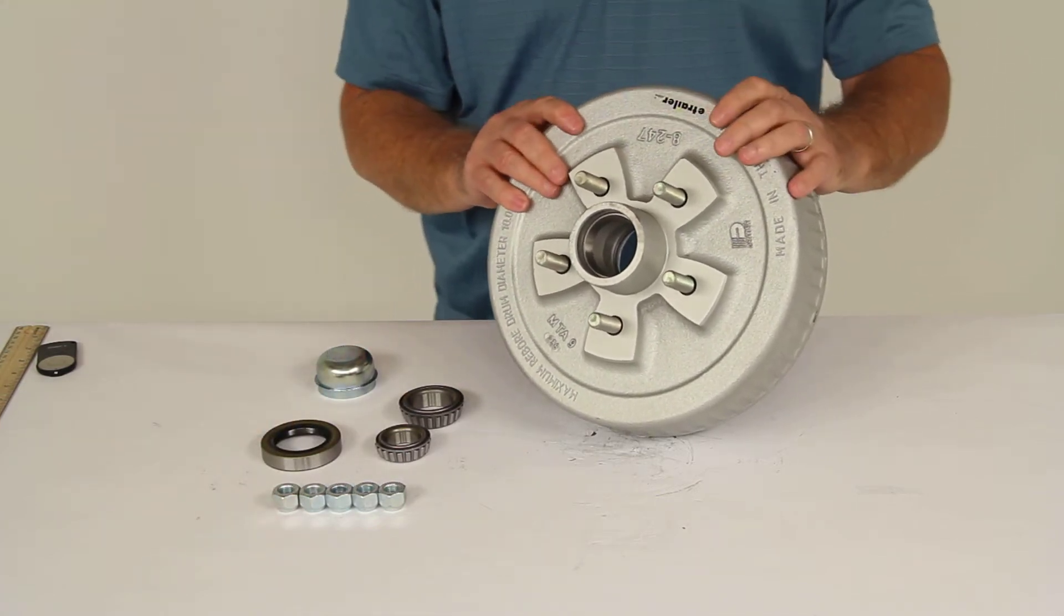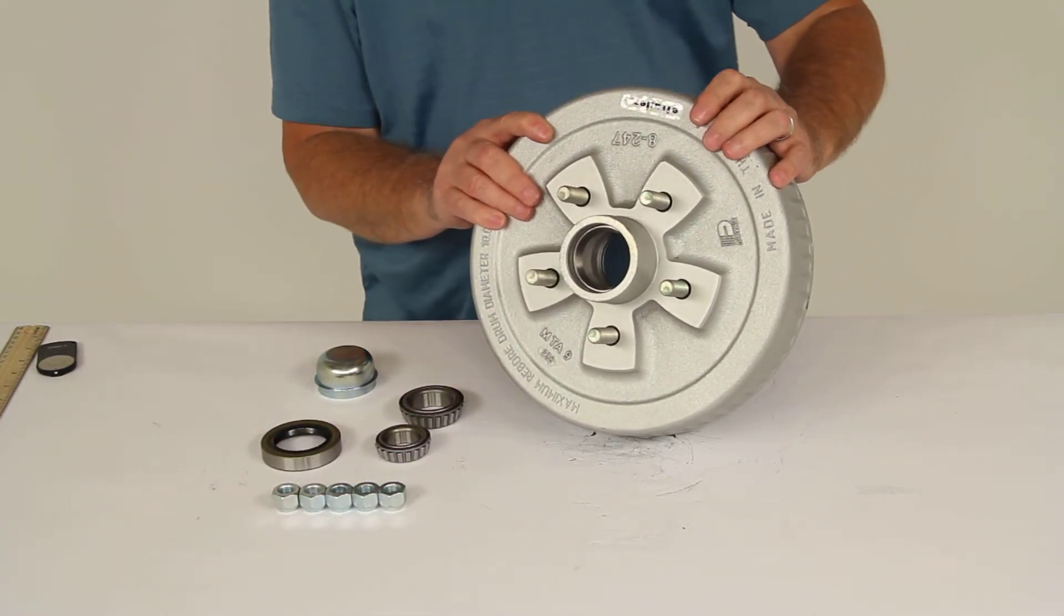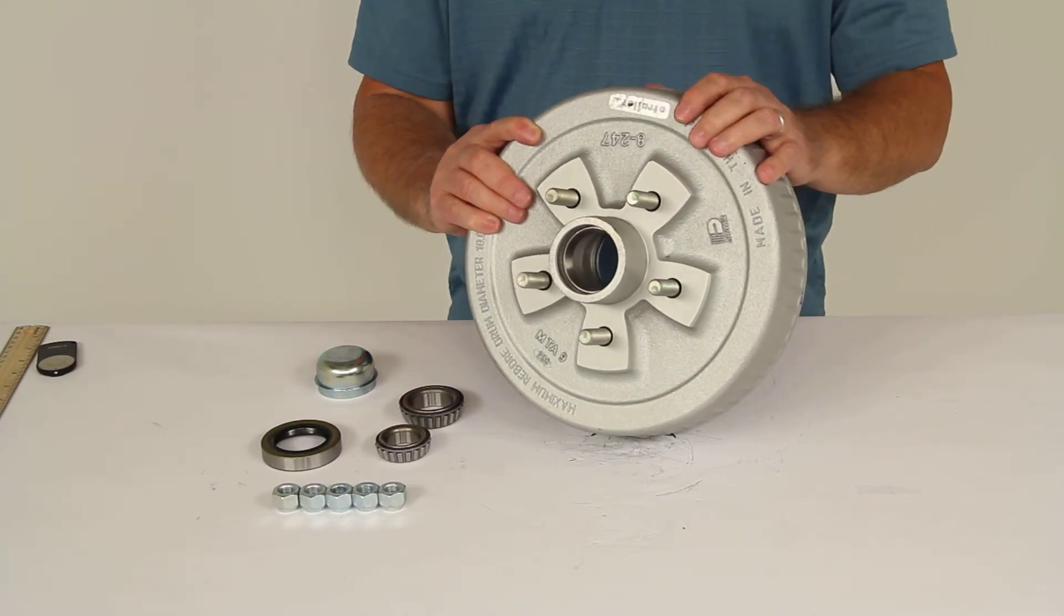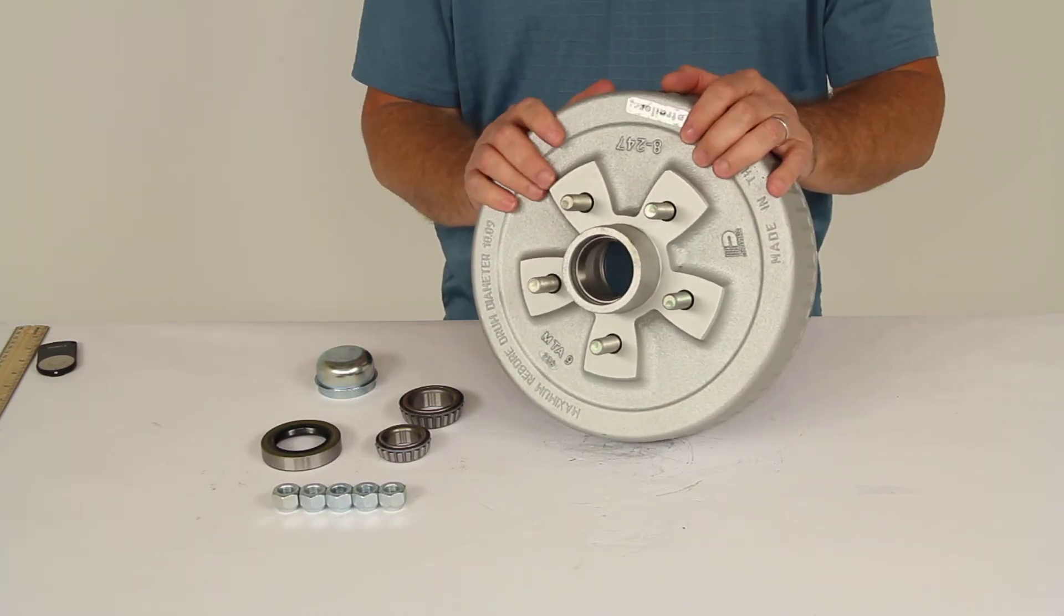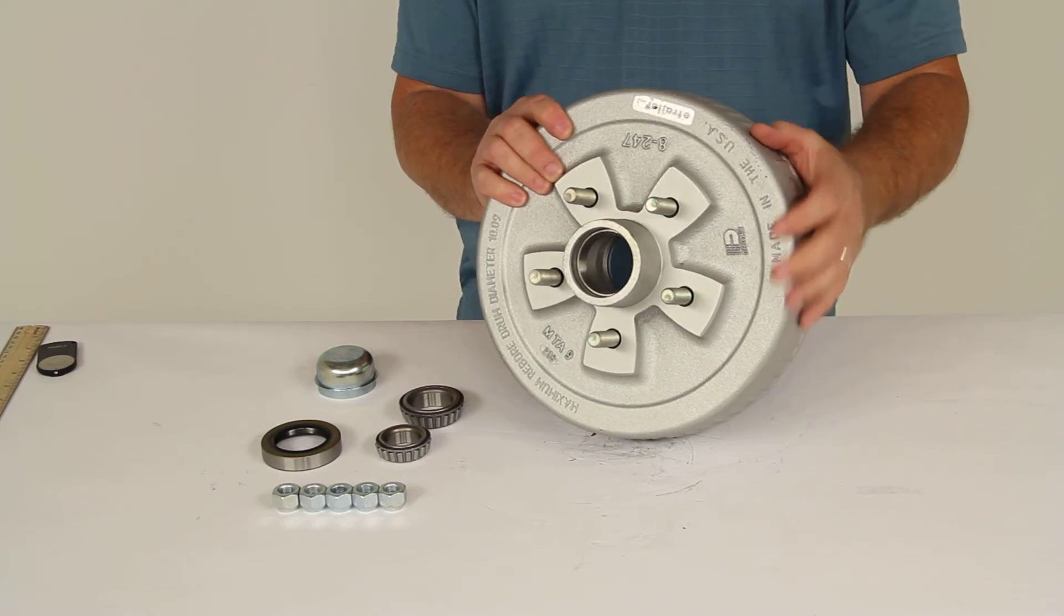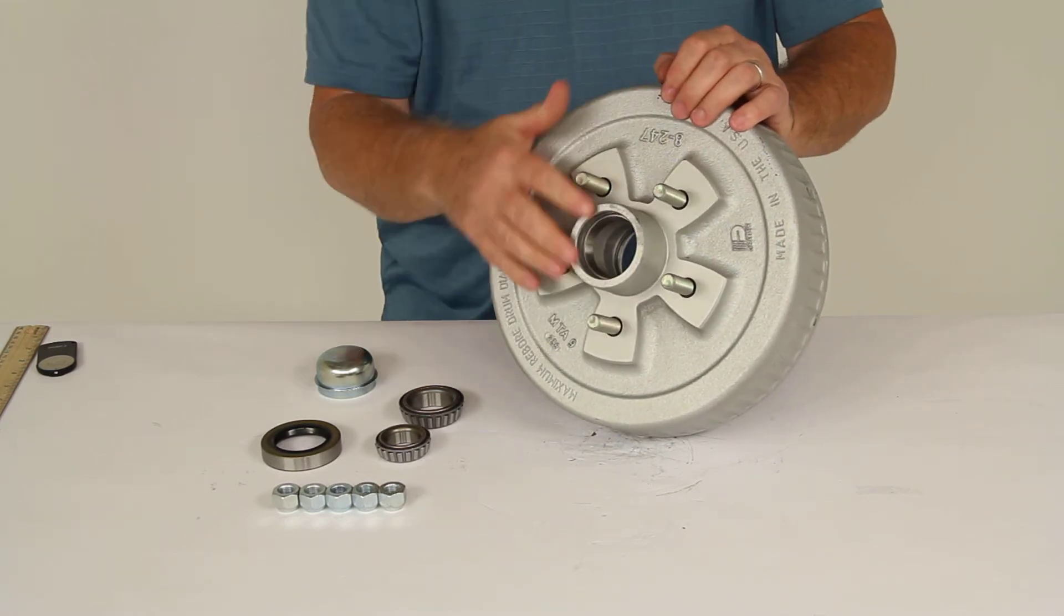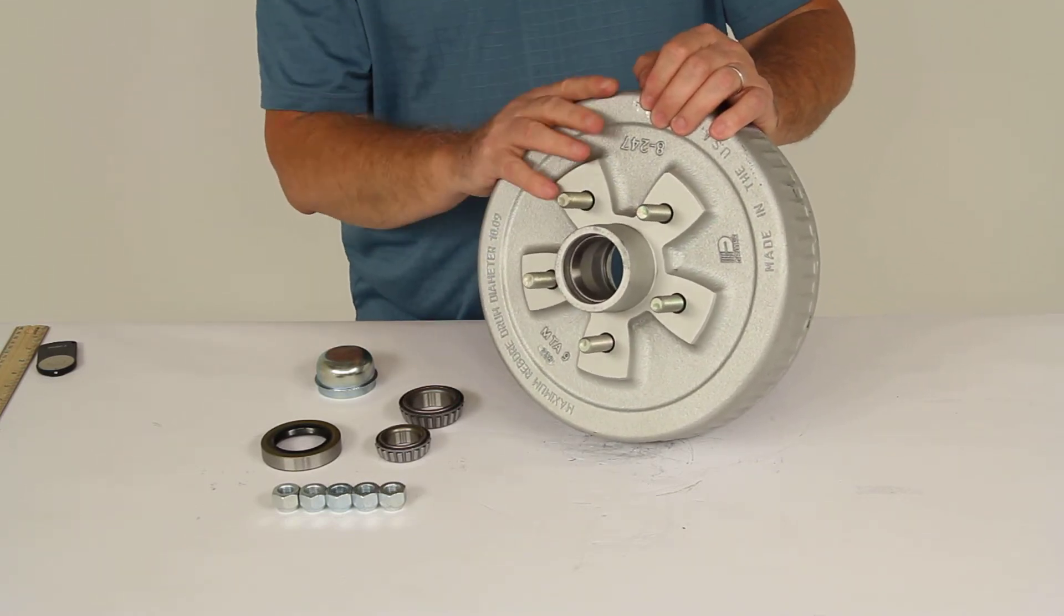That should do it for the review on part number 8-247-50UC3, the Dexter 10-inch trailer hub and drum assembly for 3,500-pound axles with the 5 on 4-1/2-inch bolt pattern in the Galdex finish.